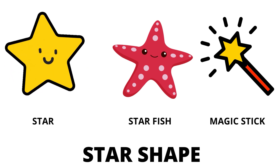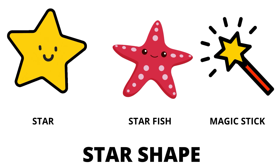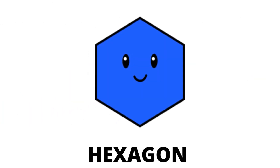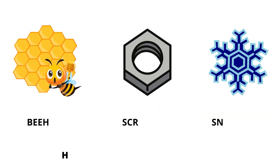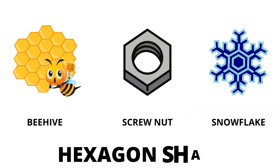Our next shape is hexagon. Hexagon has six sides. The real life examples of hexagon are beehive, screwnut, and snowflake.